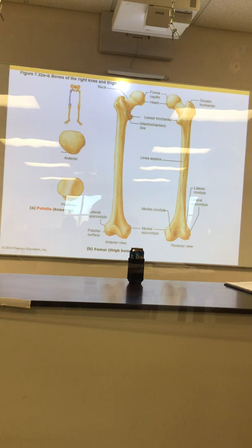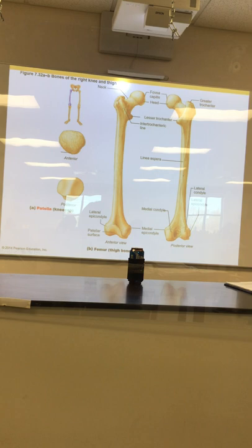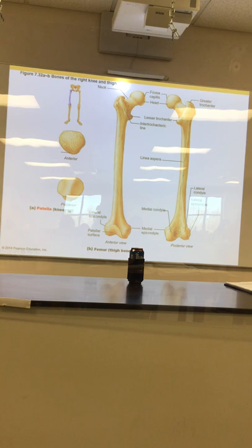Greater and lesser trochanters. Do we have linea aspera? No. Let's go to the bottom. On the bottom of the femur they've got patellar surface, medial and lateral condyles. I want you to also put in medial and lateral epicondyles — you can see them here. These are the places where the collateral ligaments connect. You can see these big lumps on the side — those lumps are where your collateral ligaments connect. Major ligaments in the knee connect to these epicondyles.